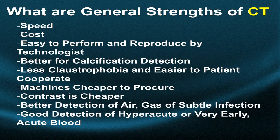What are the general strengths of CT? You can perform a neck-to-pelvis CT with the patient on the table in less than 30 seconds. These studies are cheaper, and the cost of equipment acquisition is frequently cheaper. It's easy to perform and reproduce by the technologist — not so for an MRI, which is much more technologist-dependent. CT is better for calcification detection in soft tissues, there's less claustrophobia, and it's easier for a patient to cooperate.